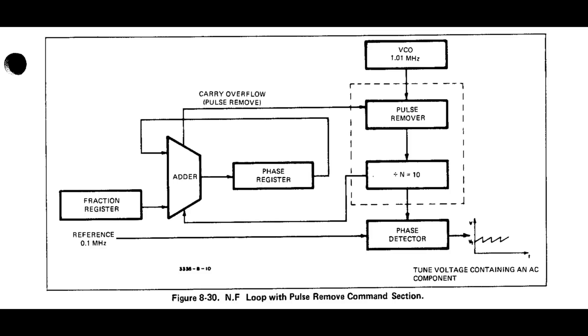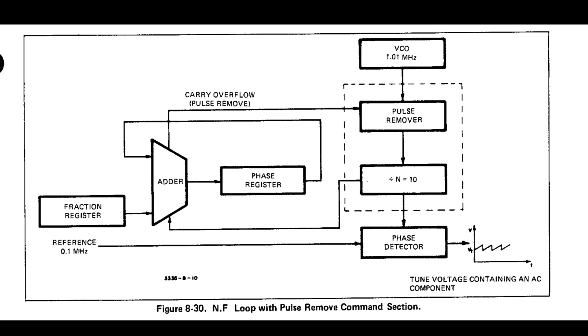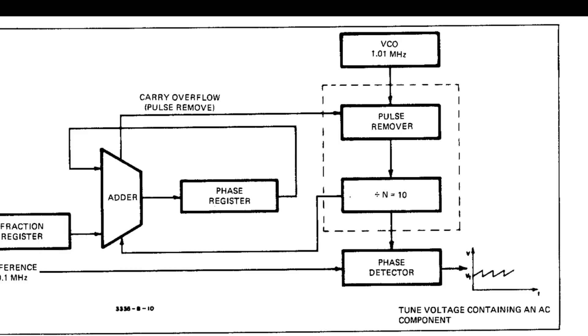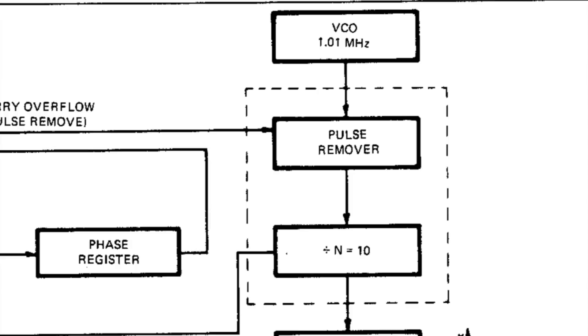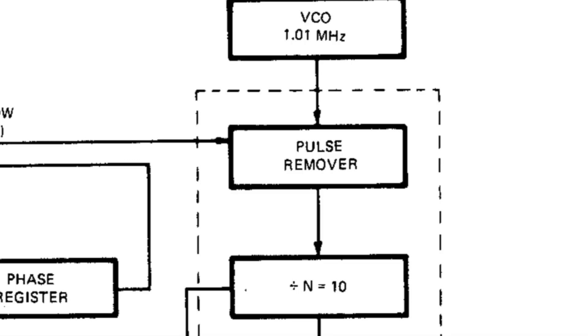But we want much smaller steps. That's when the fractional-N loop trick comes in. To achieve an intermediate step, a circuit will knock out a pulse of the VCO frequency once in a while. This is a function of the pulse remover circuit. Depending on how often you remove a pulse, this results in an average division factor that is an arbitrary fraction in between N and N plus 1, and can result in superfine steps.